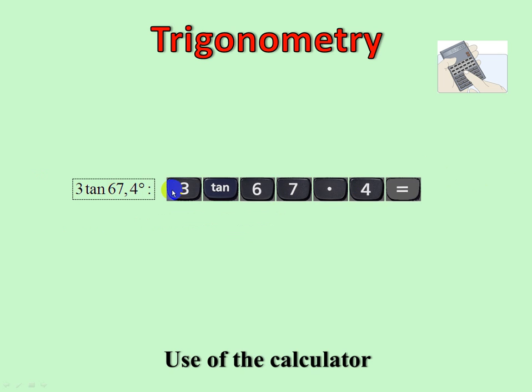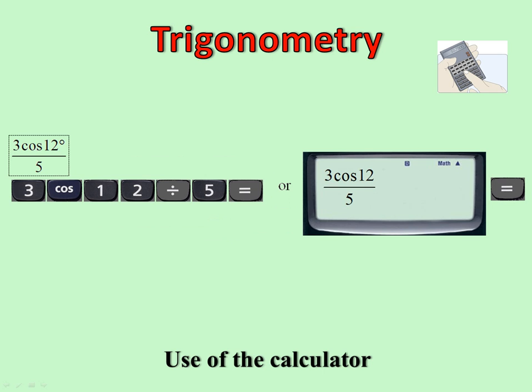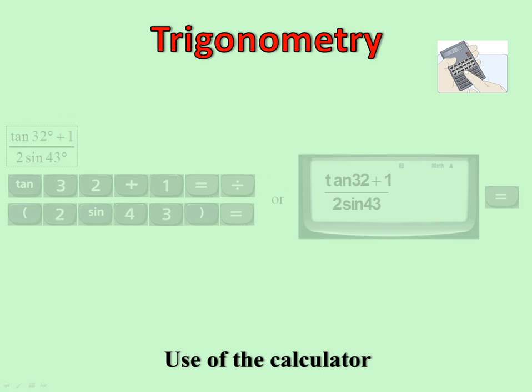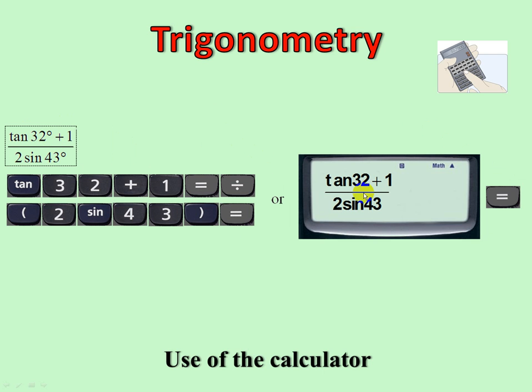3 tan 67.4, there it is, 3 tan 67.4, equals. 3 cos 12 over 5, well, 3 cos 12 divided by 5 equals, but it's better to use your fraction on the calculator, because it's exactly the same as that. Same thing there, if you use the fraction, there we are. Exactly the same.